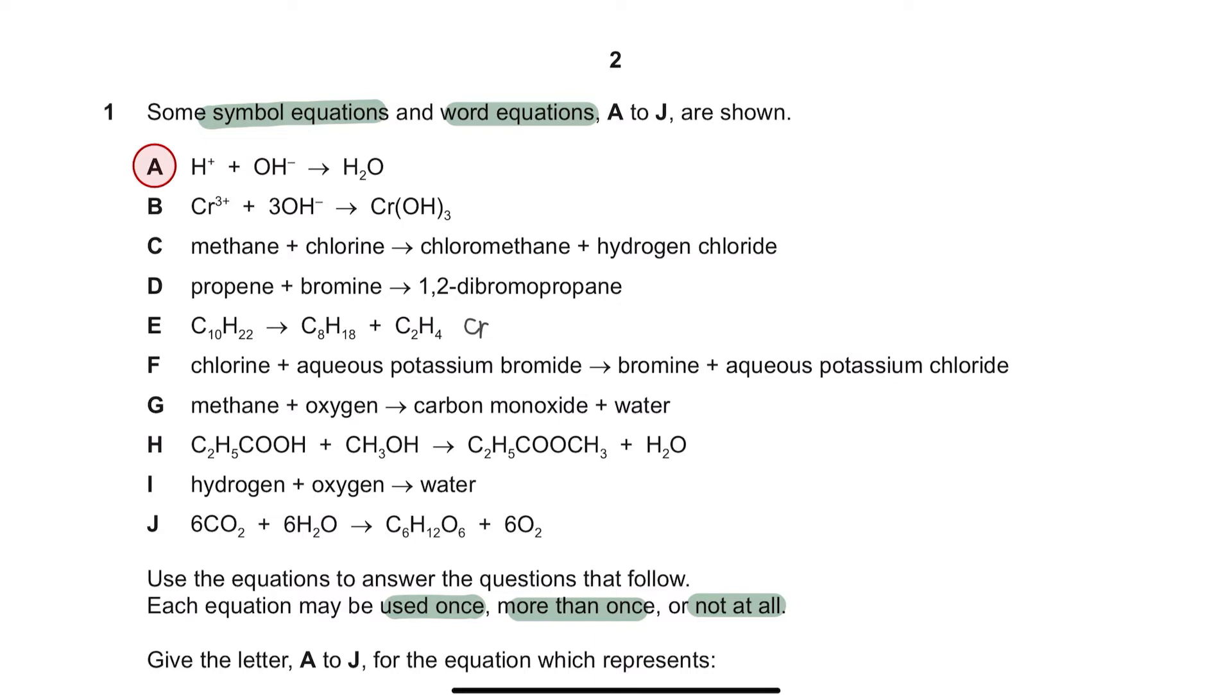Equation A. During a neutralization reaction, base is added into acid to produce a neutral solution and this is the ionic equation for neutralization. Equation B. This is an ionic equation from metal cation reacting with hydroxide anion forming a metal hydroxide precipitate. This reaction is known as precipitation.